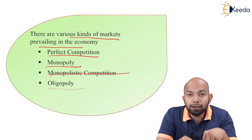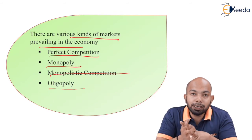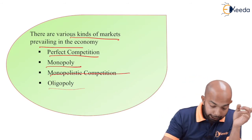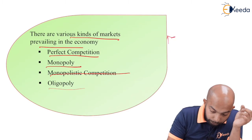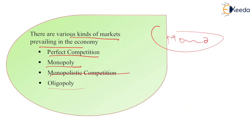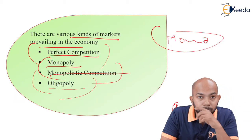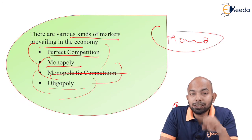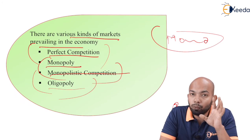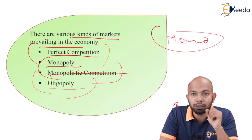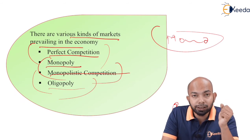We will be understanding these kinds of markets in future videos. Right now, note that at one extreme there is monopoly and at the other extreme there is perfect competition, with monopolistic competition and oligopoly in between. Make sure you are very firm about the details of these kinds of market structures. That's it for the video, thank you.